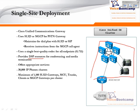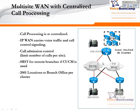Another advantage is that DSP resources are located in the same location, so they can be centralized. In this type of environment, the maximum IP phones you can have in a call manager environment is 30,000 IP phones, and the maximum number of gateways in this single-site office can be registered as 1,100 — a combination of H.323 gateways, MCU, trunk, clients, and MGCP gateways per cluster. If you have a multi-site with centralized call processing...